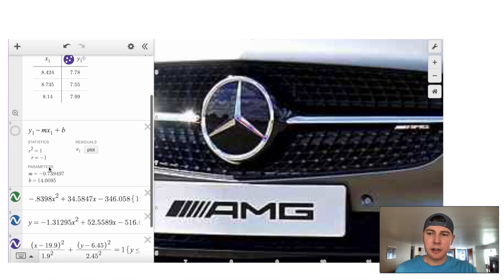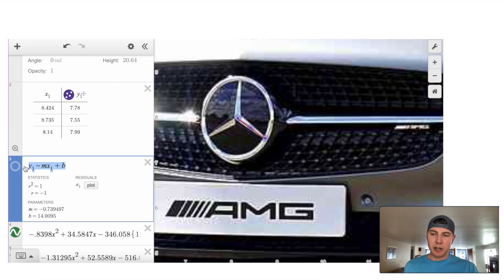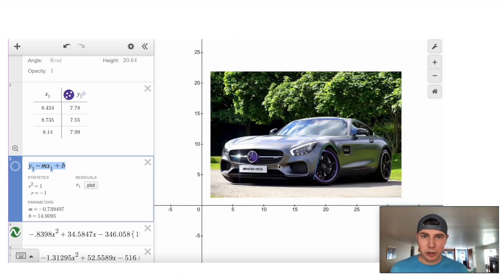So you can do regression with any shape you want. Just put the formula in. Just make sure you put y sub 1 for the y's and x sub 1 for the x's. And that'll work. So that's how to use regression to draw in Desmos. How exciting.